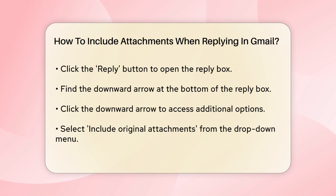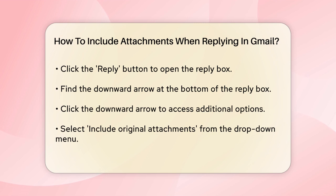Now here's the important part. At the bottom of the reply box, you'll see a downward arrow. Click on this arrow to reveal additional options. From the drop-down menu, select Include Original Attachments. This feature allows you to send the attachments that were included in the original email along with your reply.